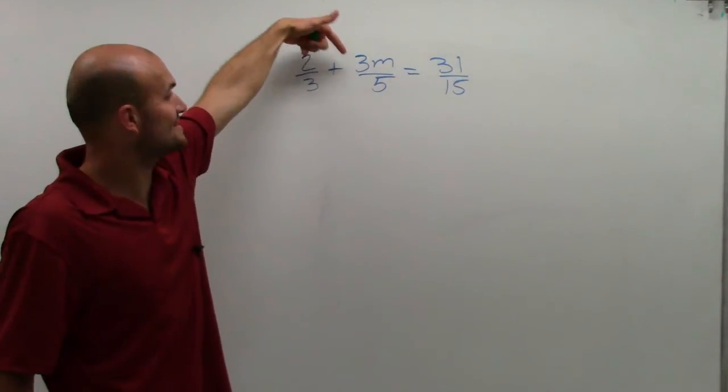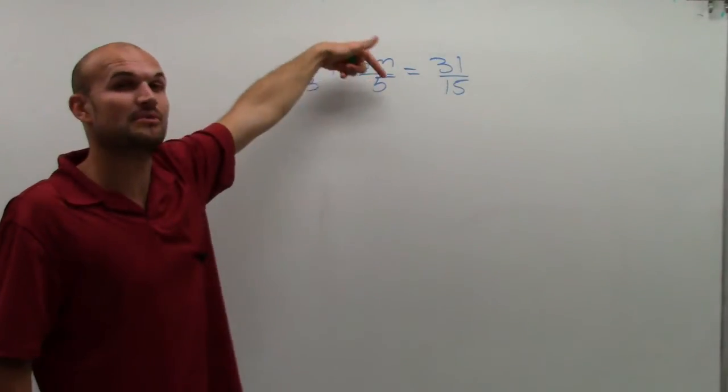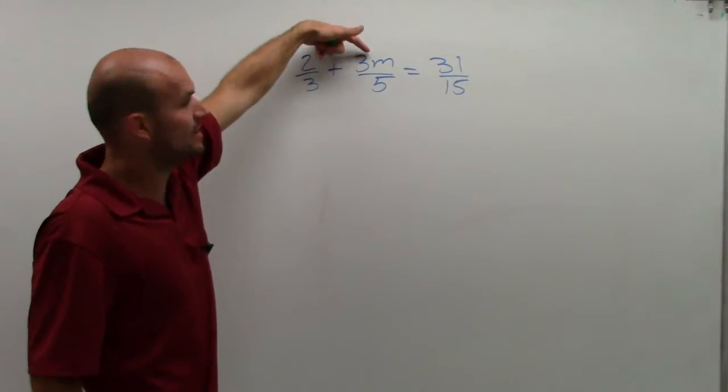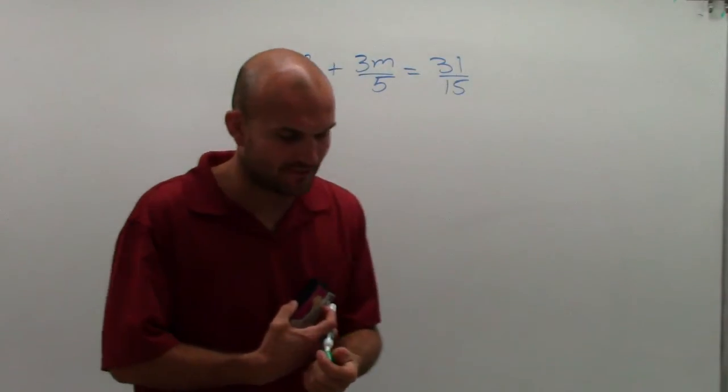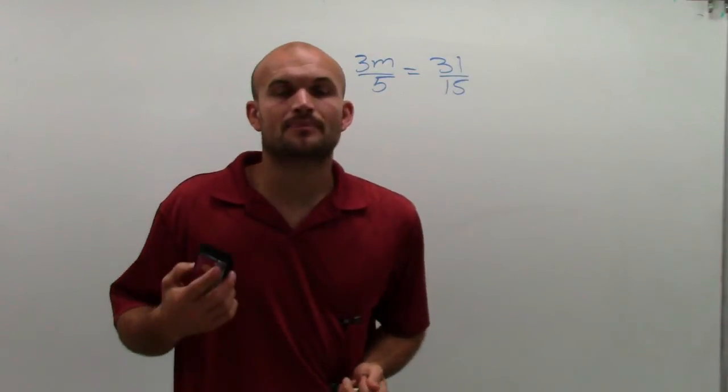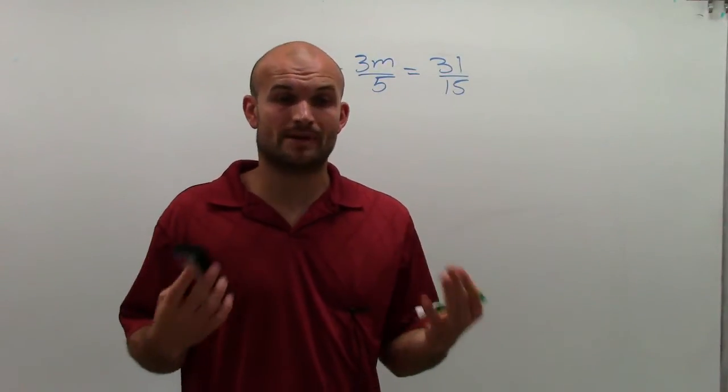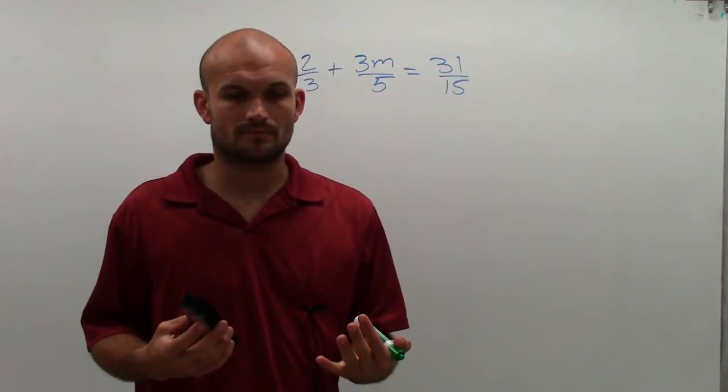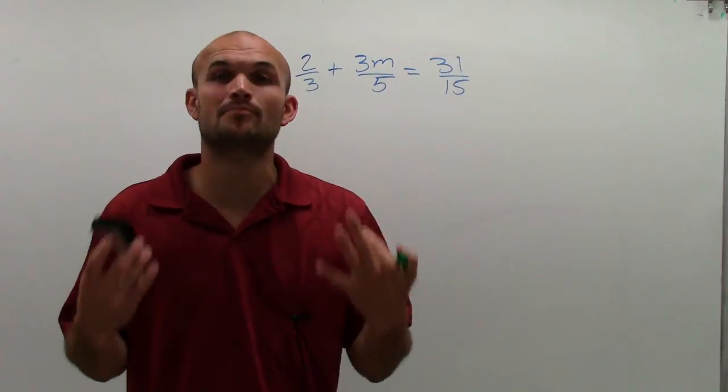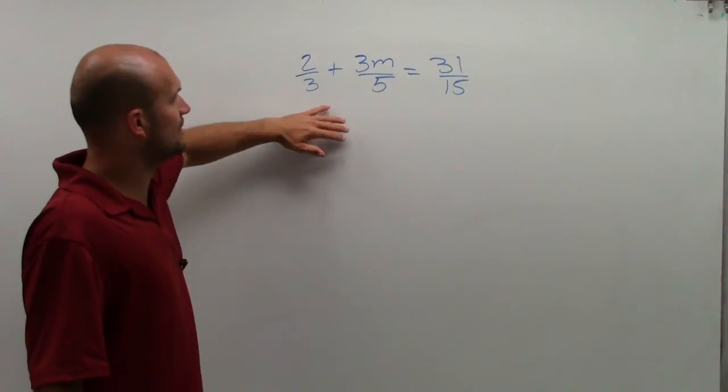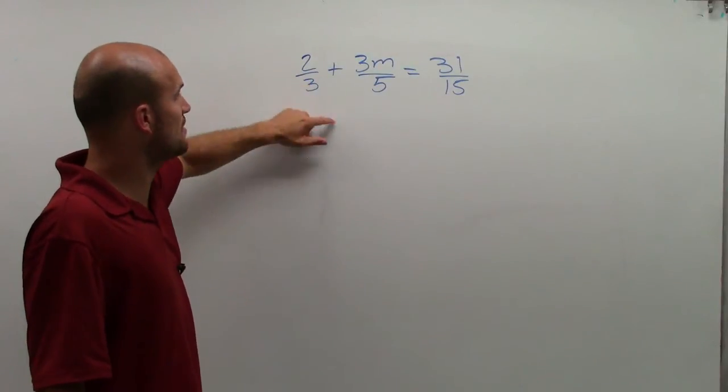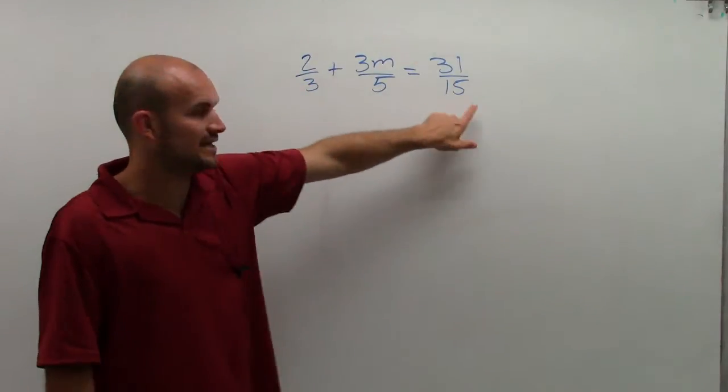So now I look at the next one and I say, alright, well, to get rid of this, I'd have to multiply by 5. Again, it will work for this one, but it won't work for that. So what we need to do is figure out a number that is going to be a common multiple of all of our denominators. So we look at what is the least common multiple of 3, 5, and 15.